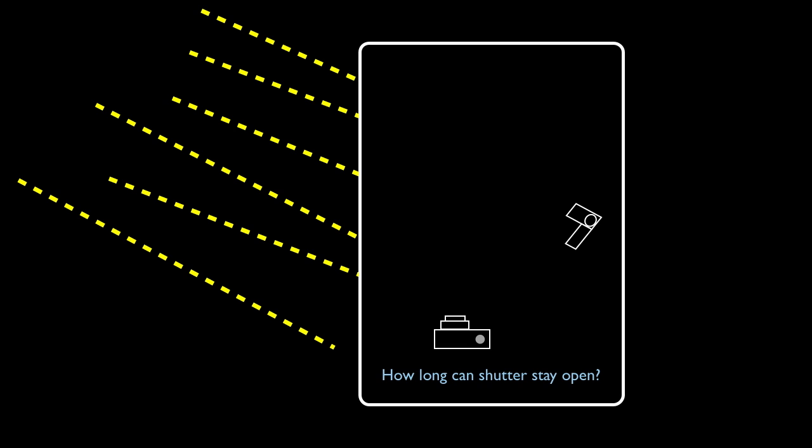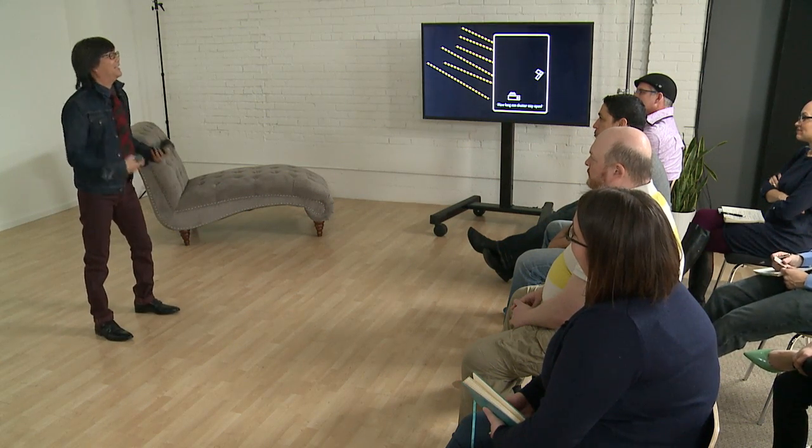My flash goes off for a fraction of a second. Is that subject still there? Yes, but your camera cannot see it. So that person could be doing whatever — you can't see it. You cannot see that person; it is completely dark. My shutter can still be open. I can go out to dinner, have a fabulous sushi dinner, come back, close the shutter — and that shot is perfectly exposed.